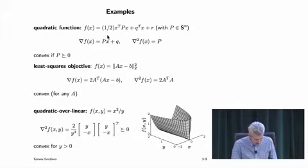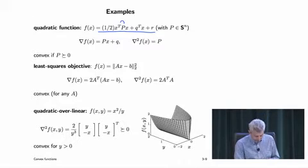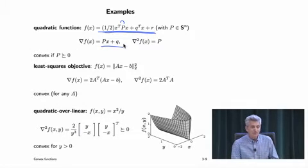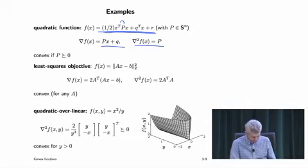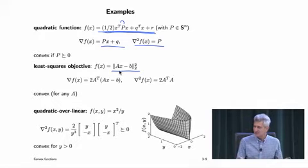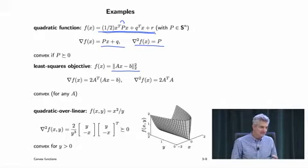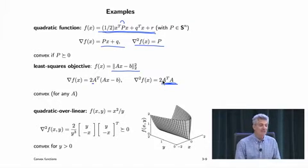Let's knock off all quadratic functions. For f(x) = (1/2)x^T P x + q^T x + r, we can assume P is symmetric. The gradient is Px + q and the Hessian is P. A quadratic function is convex if and only if its quadratic part P is positive semi-definite. For the least squares objective f(x) = ||Ax - b||^2, the Hessian is A^T A, which is always positive semi-definite.